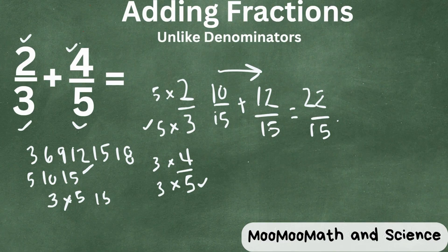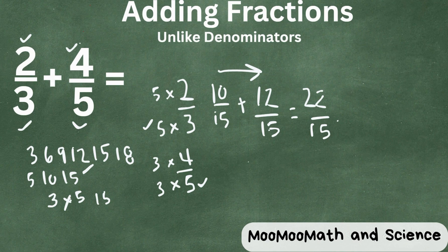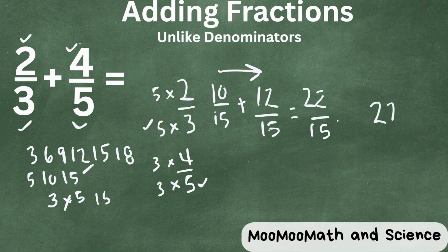These cannot be simplified further, but we can change it to a mixed number. So let's do twenty-two divided by fifteen.